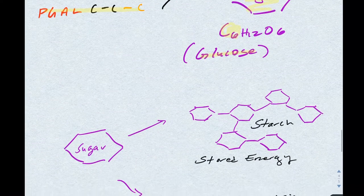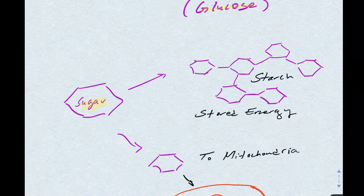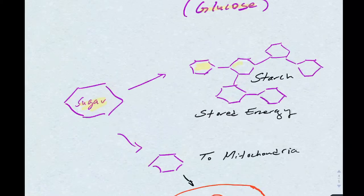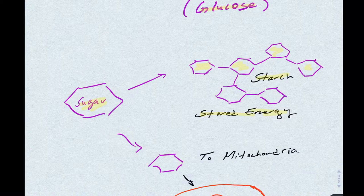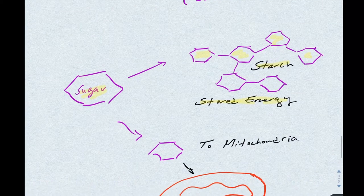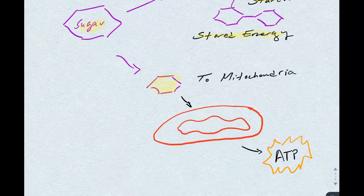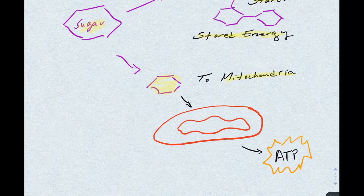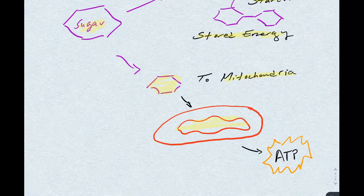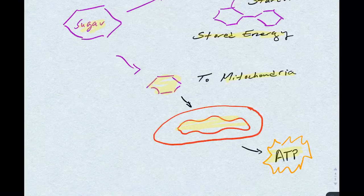The plant can take this sugar and polymerize it to make starch, which is stored energy for the plant. Or the energy within the sugar molecule can be converted with the help of the mitochondria of the plant cell to make large amounts of ATP.